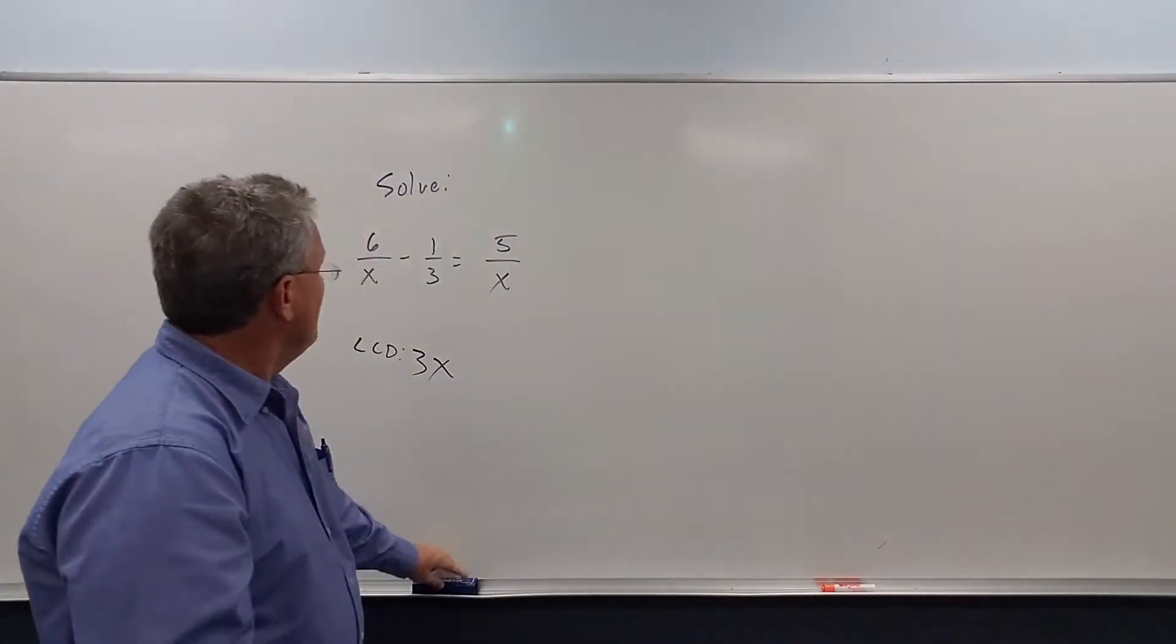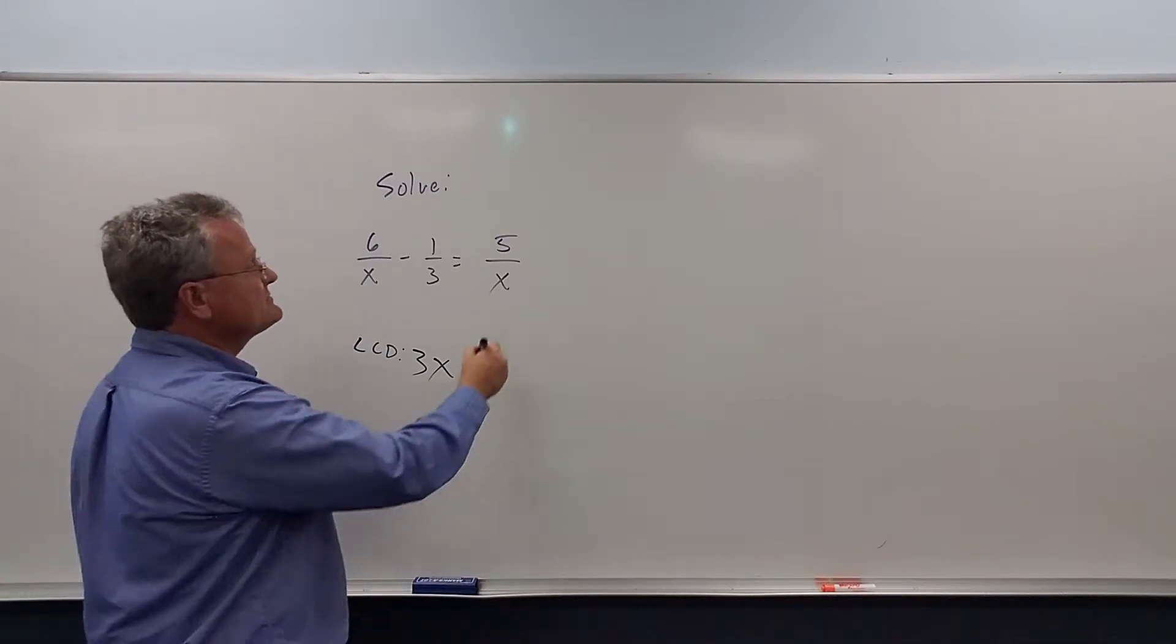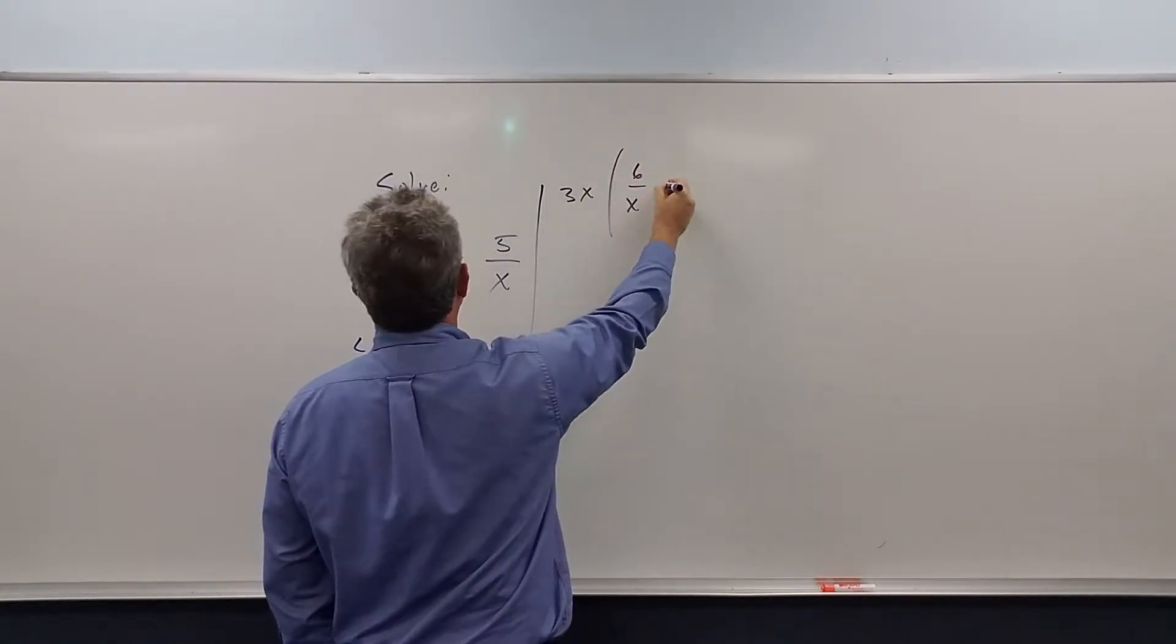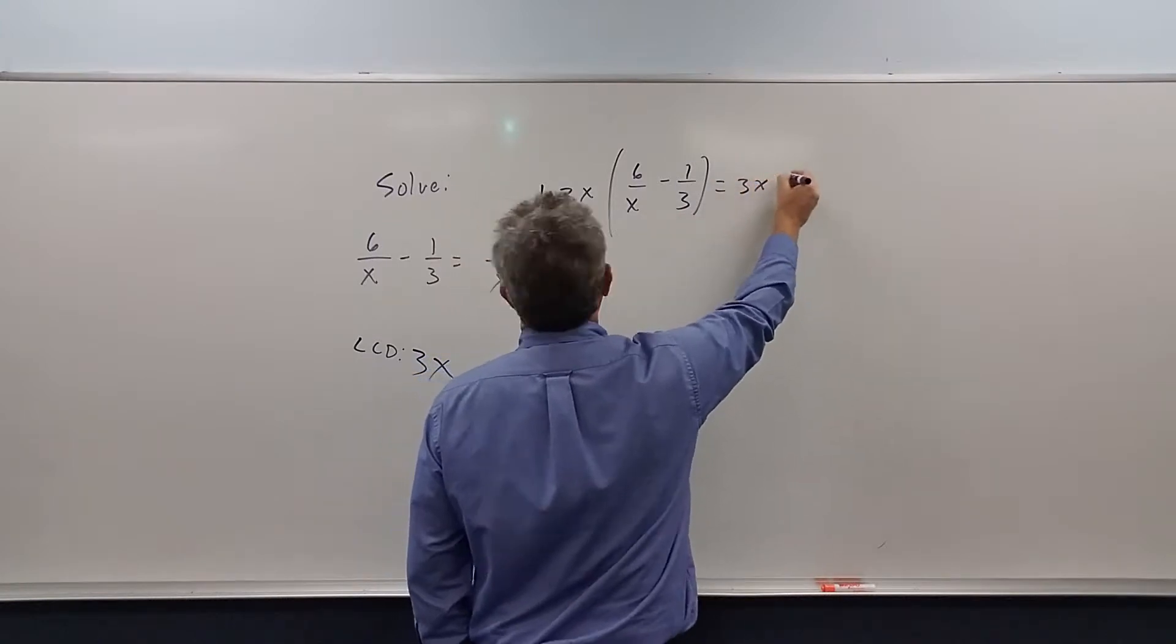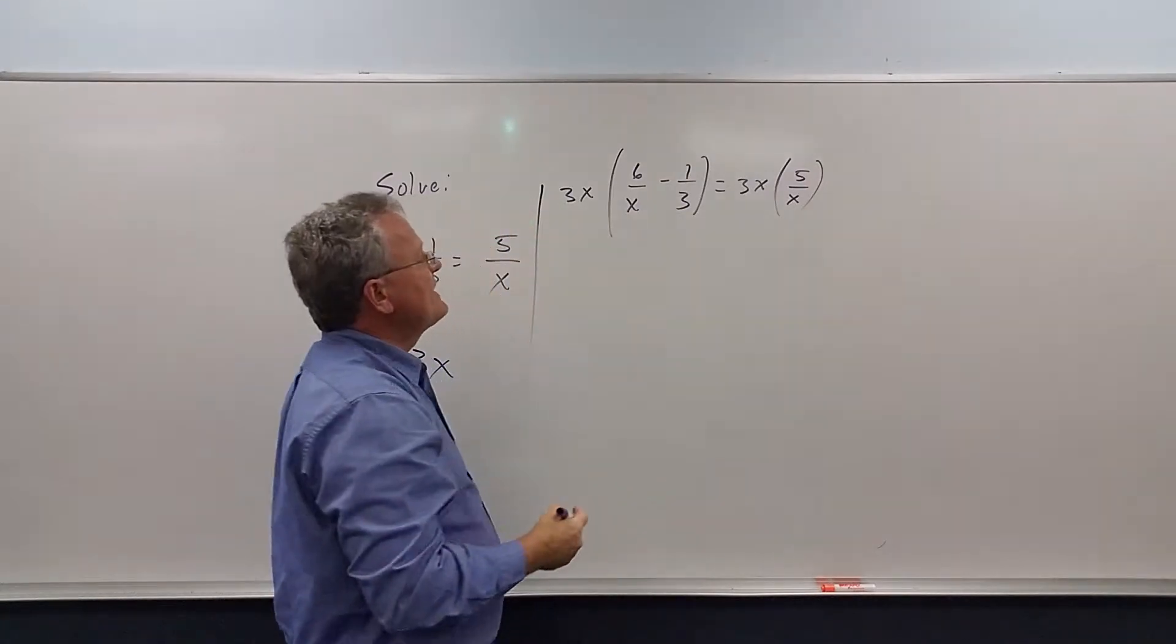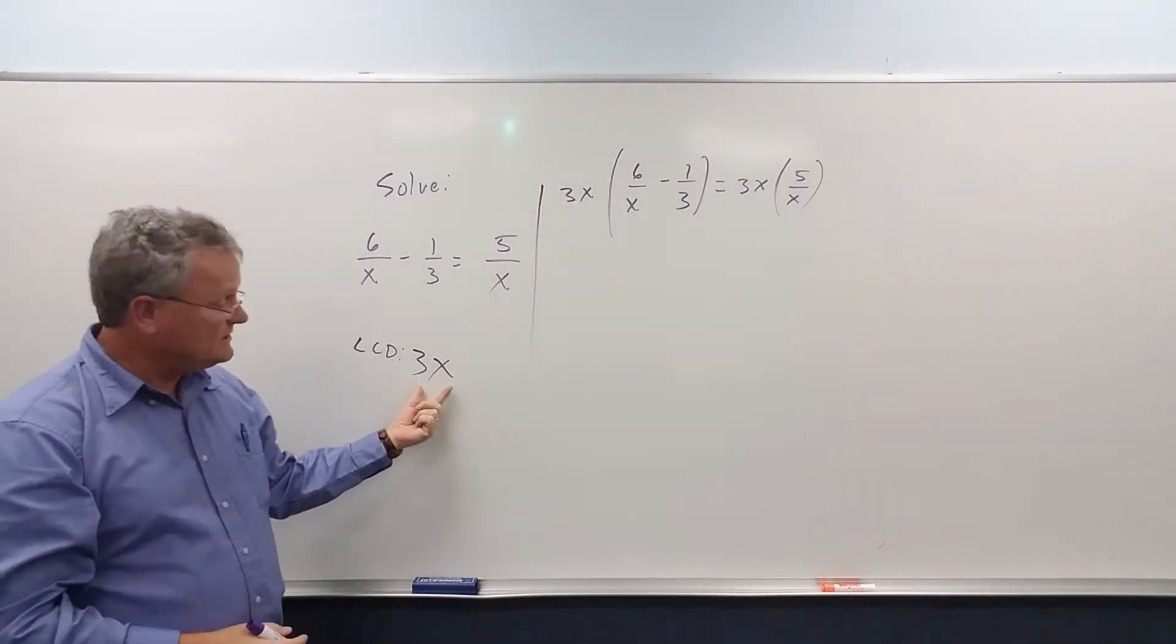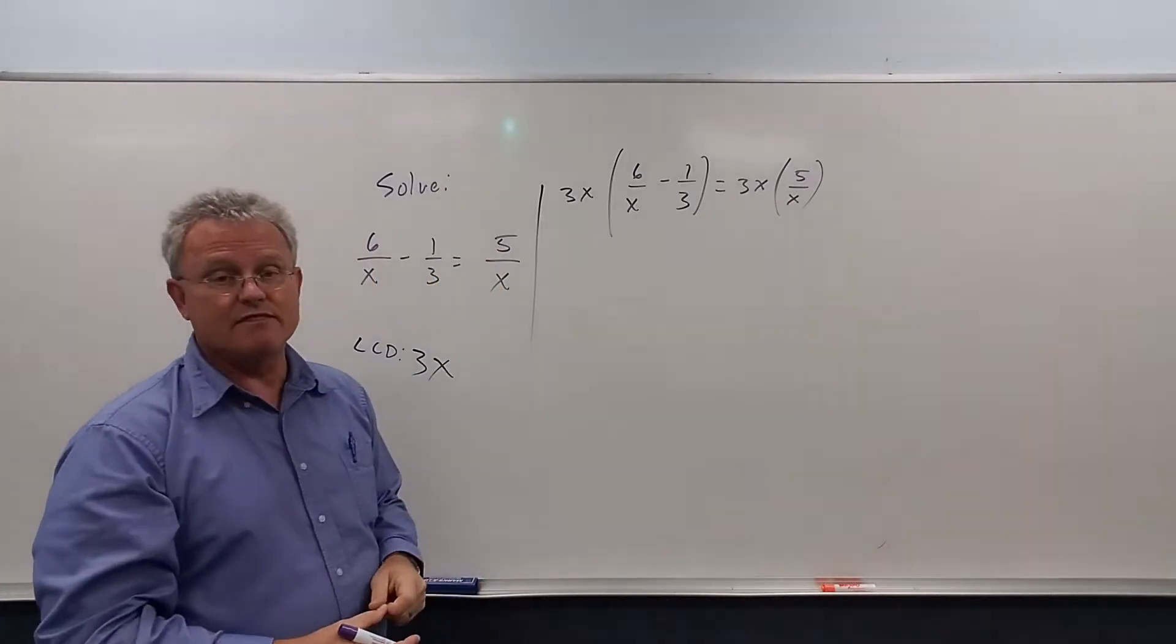So, let's multiply both sides of this equation by 3x. Now multiply, I'm going to do every step here. So we multiply both sides of this equation by 3x. Notice when I distribute, when we multiply both sides by the LCD, which is 3x, it's the same thing as just multiplying every term by 3x.